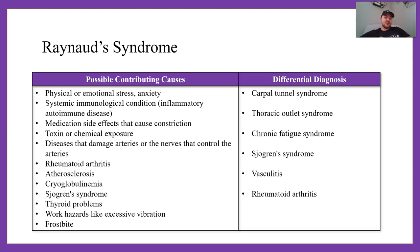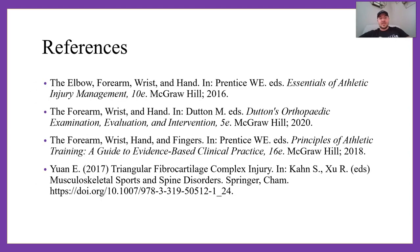Possible contributing causes include physical or emotional stress, immunological conditions, medication side effects causing vasoconstriction, toxin or chemical exposure damaging vessels, diseases that damage arteries or nerves controlling the arteries, RA, atherosclerosis, cryoglobulinemia, Sjögren's syndrome — you guys should look that one up — thyroid problems, work hazards like excessive vibration from a jackhammer, and frostbite. For differential diagnosis, consider carpal tunnel syndrome due to the tingling, TOS, chronic fatigue syndrome, Sjögren's syndrome, vasculitis, and RA.